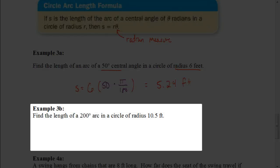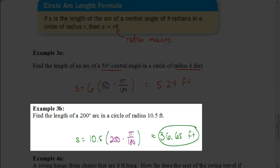Try the next one on your own: find the length of a 200-degree arc in a circle of radius 10.5 feet. You should get 36.65 feet. The radius is 10.5, multiplied by the radian measure of 200 × π over 180, giving 36.65 feet.